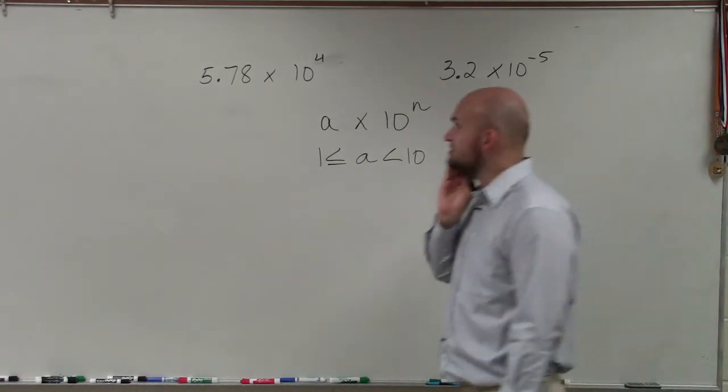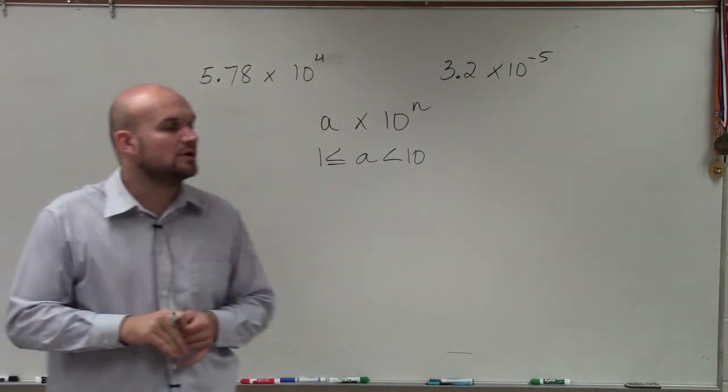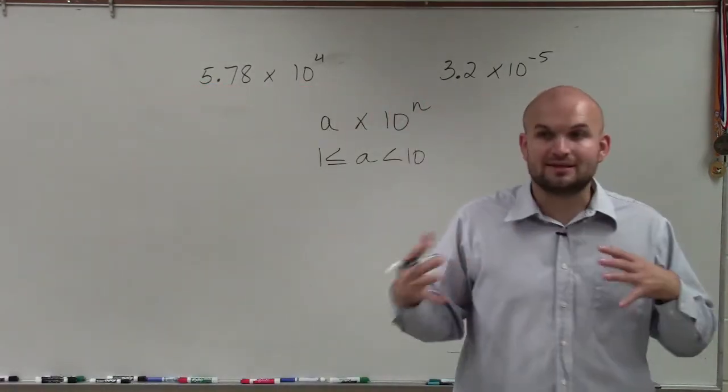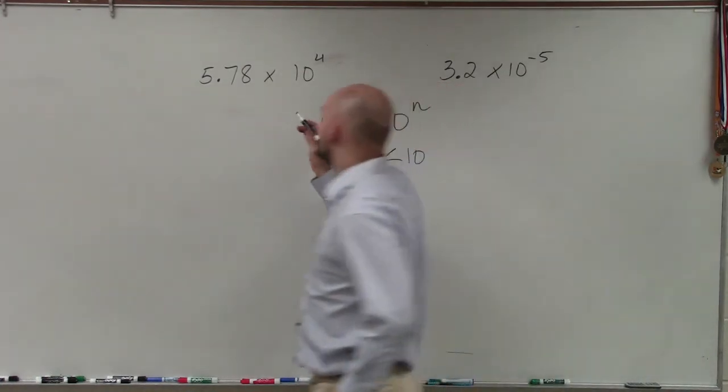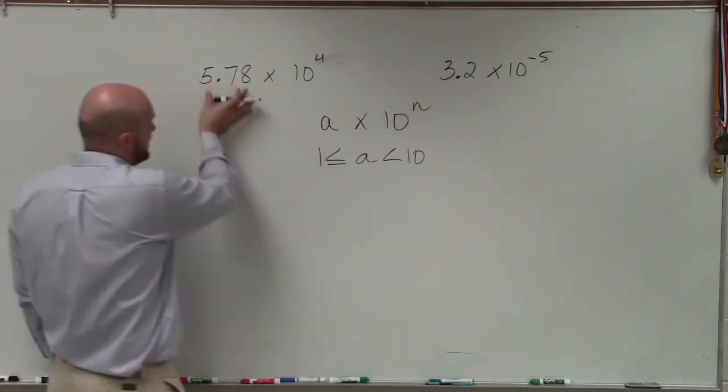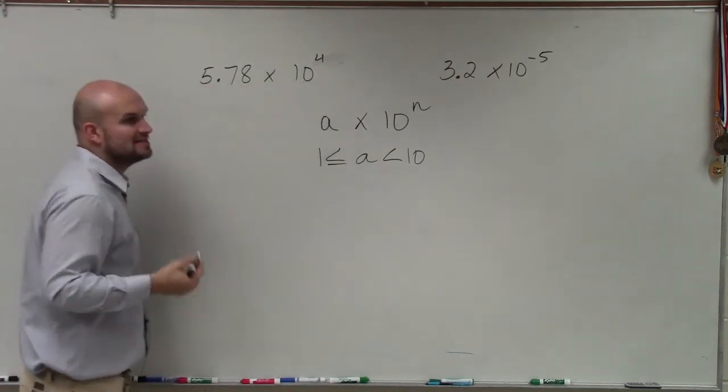So basically, ladies and gentlemen, what scientific notation represents is I have two examples that are in scientific notation. And one of the things that we'll be talking about today is how to rewrite them out into number form. So basically, all scientific notation means is we have this value a, which is between 1 and 10, right? And then basically, what we're doing is multiplying it by 10.